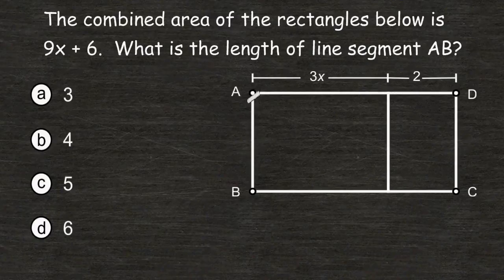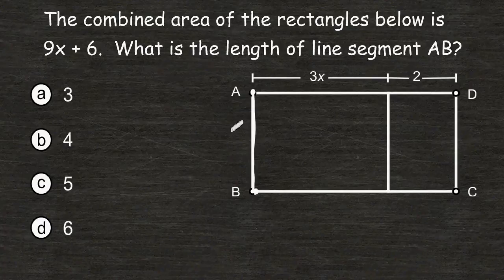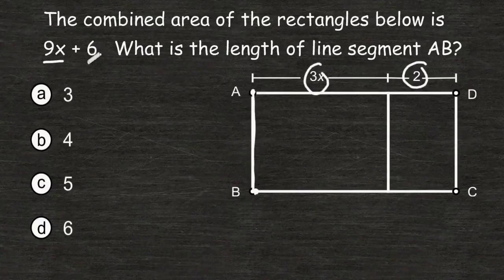So we have to figure out what is the distance from point A to point B, so when we multiply that distance by 3x and by the length of 2, we get a product of 9x plus 6.